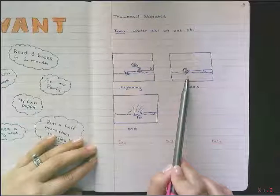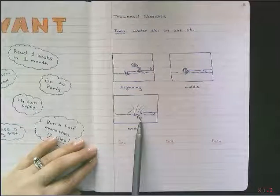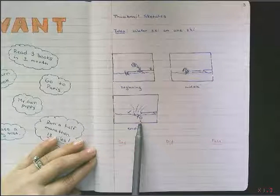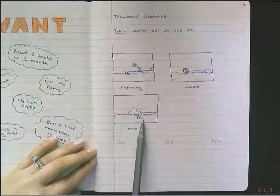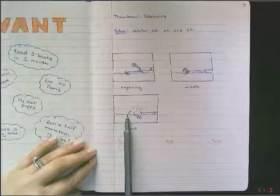The boat starts to go, starts to pull me up out of the water, and the rope gets pulled out of my hands. I go face first into the water, and my water ski flies off my foot.